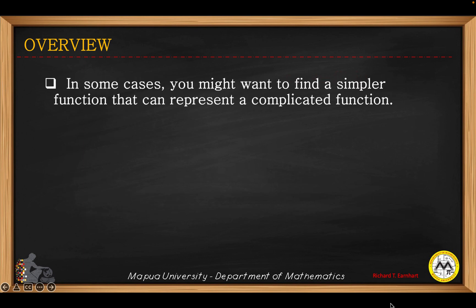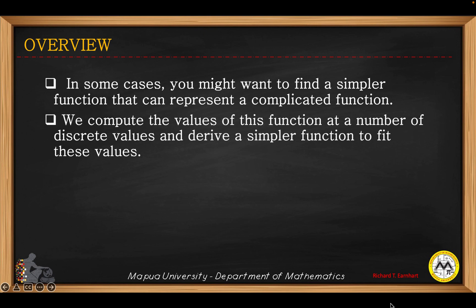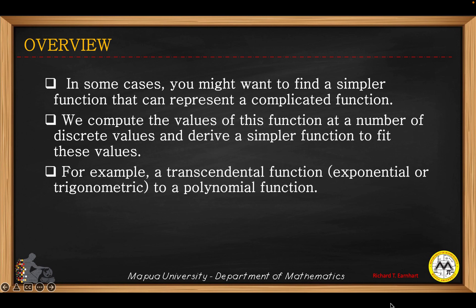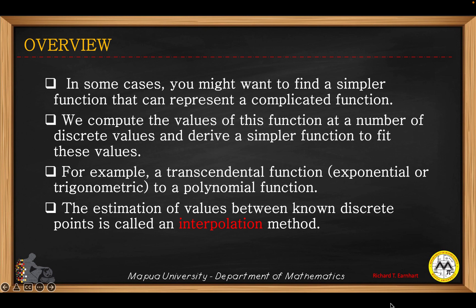In some cases you might want to find a simpler function that can represent a complicated function. We compute the values of this function at a number of discrete values and then derive a simpler function to fit these values. For example, a transcendental function — such as an exponential or trigonometric function — may be converted into a polynomial function. The estimation of values between known discrete values is called an interpolation method.